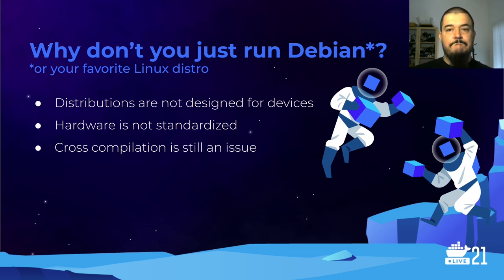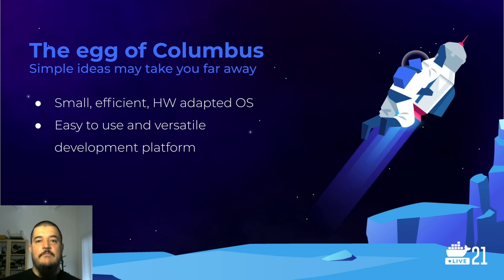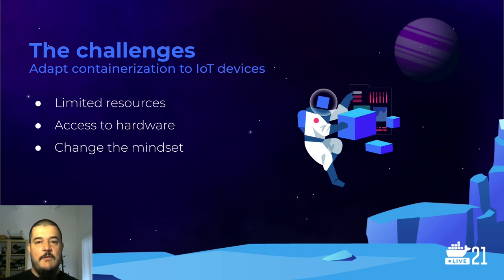Even if you manage to run a standard distribution, you probably still need to cross-compile your software because you may not be using the same architecture as your PC. Containers can be the egg of Columbus — a simple solution to a complex problem. We can have a small, efficient OS well-adapted to the hardware that is then able to run containers, allowing application development using high-end frameworks and tools. But this still comes with challenges.